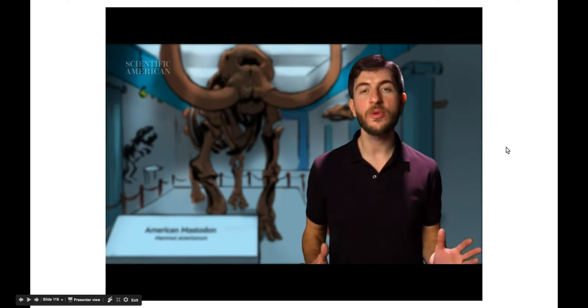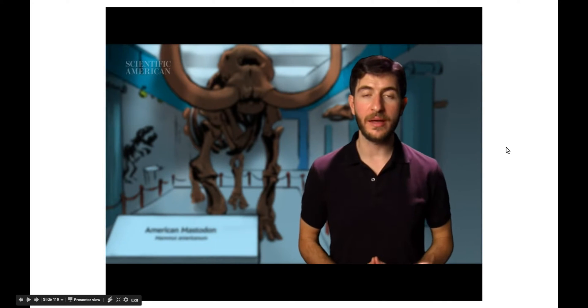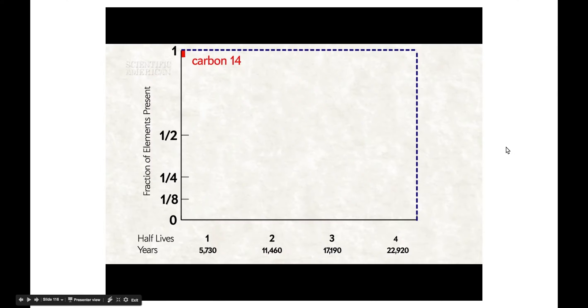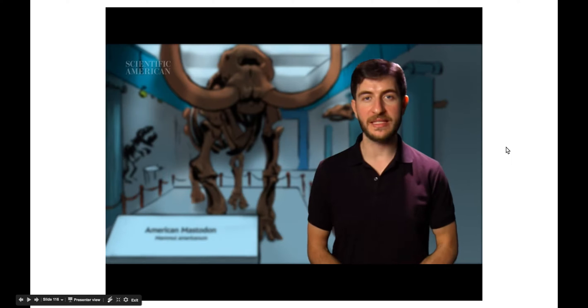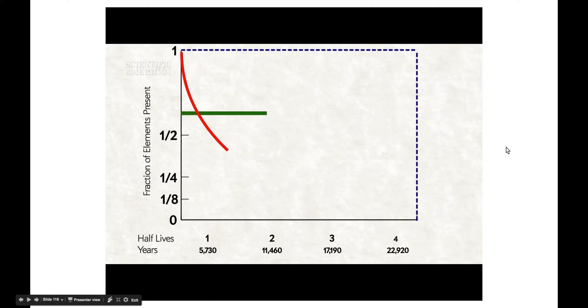So once an animal dies, the carbon-14 in its body will start to go away. Every 5,730 years on average, about half of the carbon-14 atoms will decay into nitrogen. This is its half-life. After one half-life, the animal will have about half the amount of carbon-14 it started with. After another half-life, it will have about a quarter. And after another half-life, it will have about an eighth. By contrast, the amount of carbon-12 it has in its body will stay the same. By measuring the ratio of carbon-14 to carbon-12, we can measure how many thousands of years have passed since the animal died.